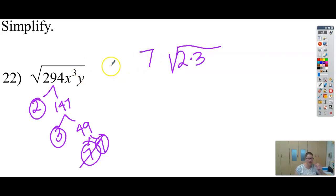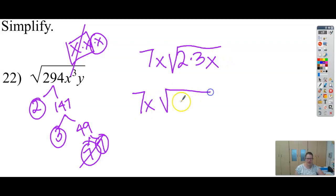x to the 3rd means x times x times x. So for these 2 x's, I could bring 1 outside, but that one's going to have to stay inside. So I've got 7x on the outside and 6x on the inside.